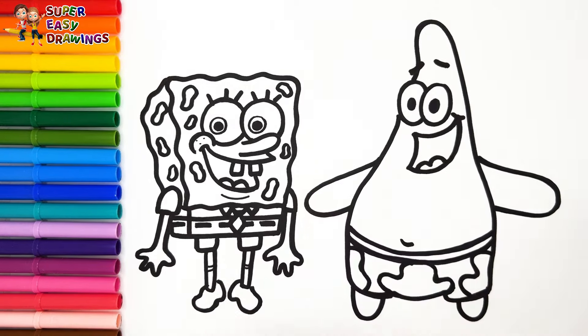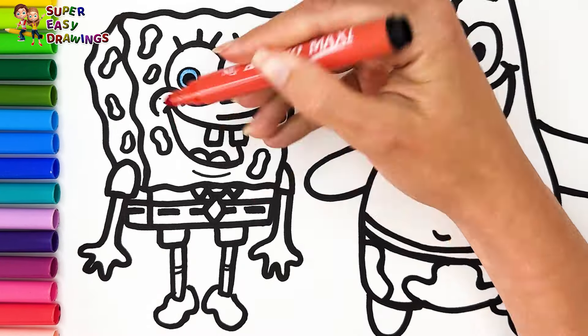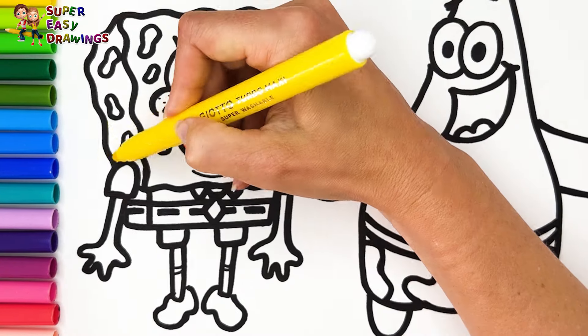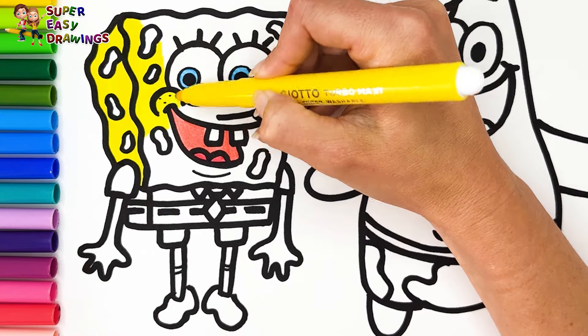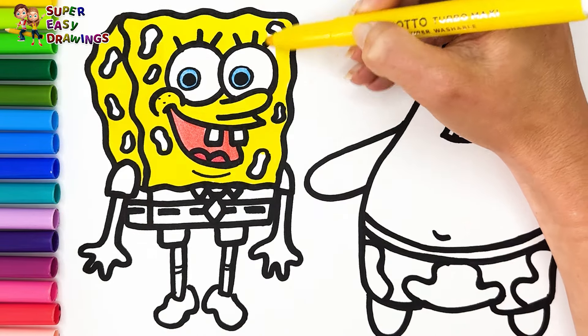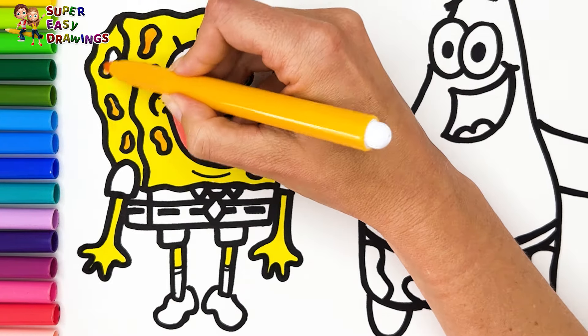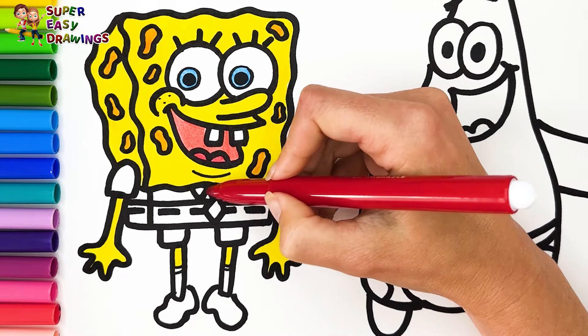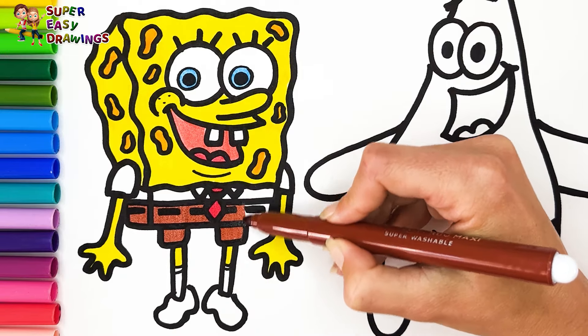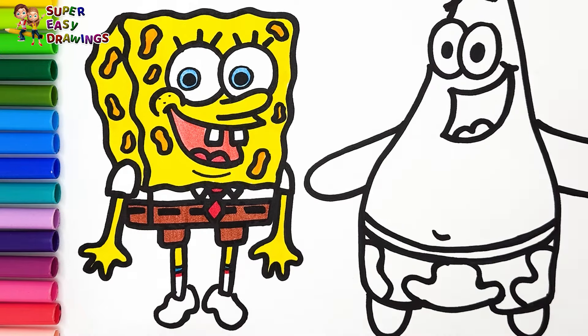Let's start coloring. I use blue for Spongebob's eyes. Then I use two different shades of red for his mouth. I color his body yellow, then I use this marker for the holes. His shirt is going to be white. I color his tie with red, brown for his pants. Finally I use blue and red for his socks.